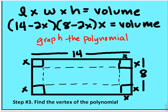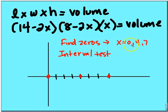So we're going to graph the polynomial and we're going to find the zeros: 0, 4 and 7. Pretty easy to do from here and we're going to plot those on our graph. This is going to be 0, 0, 0.